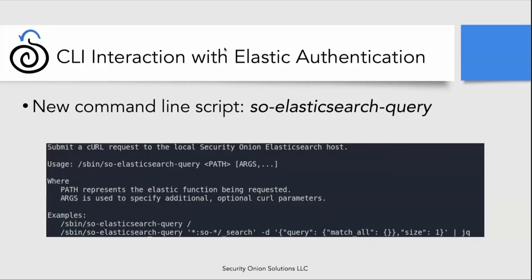Also with this release, we're introducing a new script called SO-ELASTIC-SEARCH-QUERY. This is a simple wrapper script for curl to remove the need to pass authentication information on the command line. Use it very similarly to curl — you can pass additional curl arguments as arguments to this script — with the sole difference being that instead of passing the entire URL as the first argument, you'll just pass in the path. The image in this slide provides examples on how to use it.